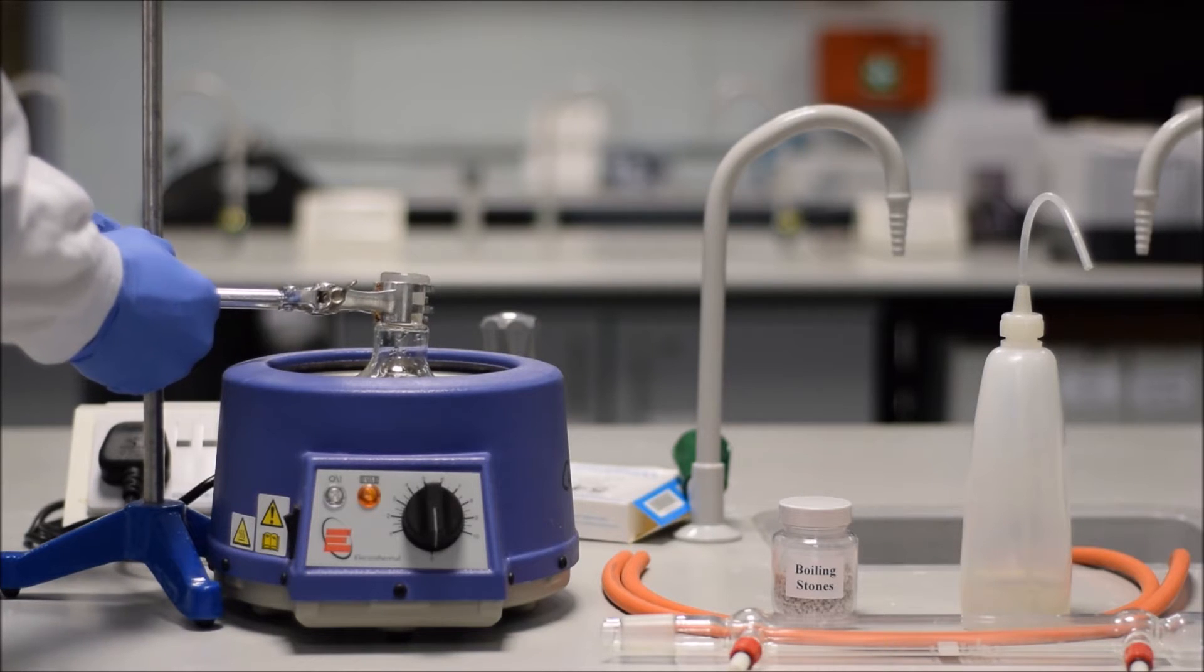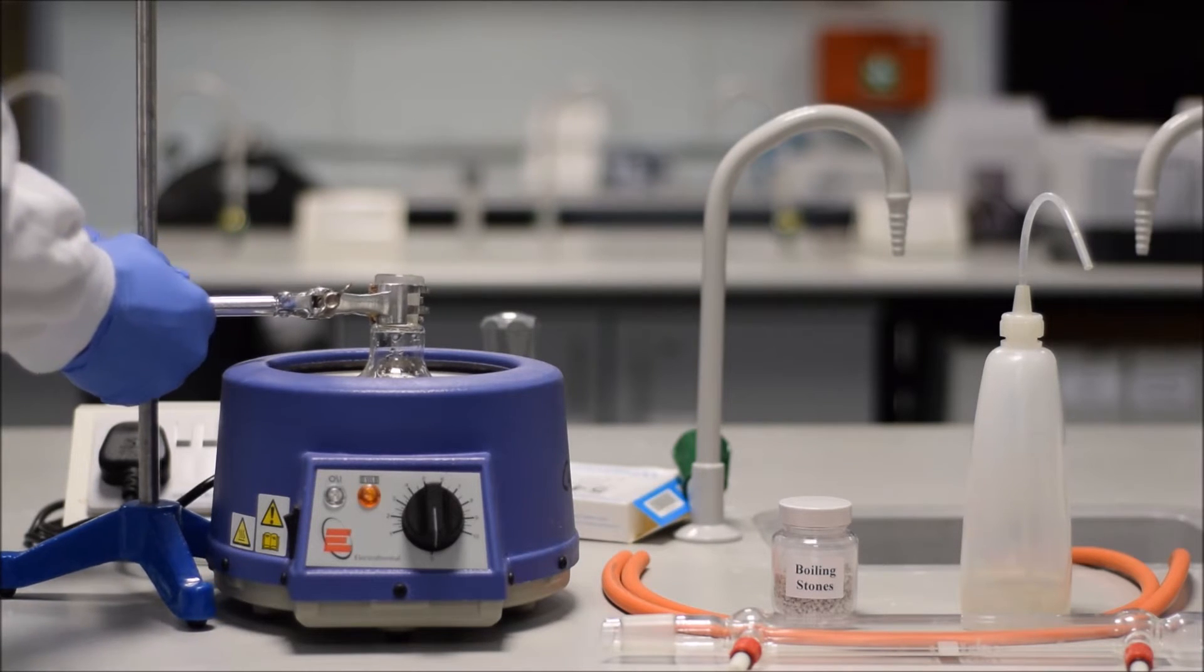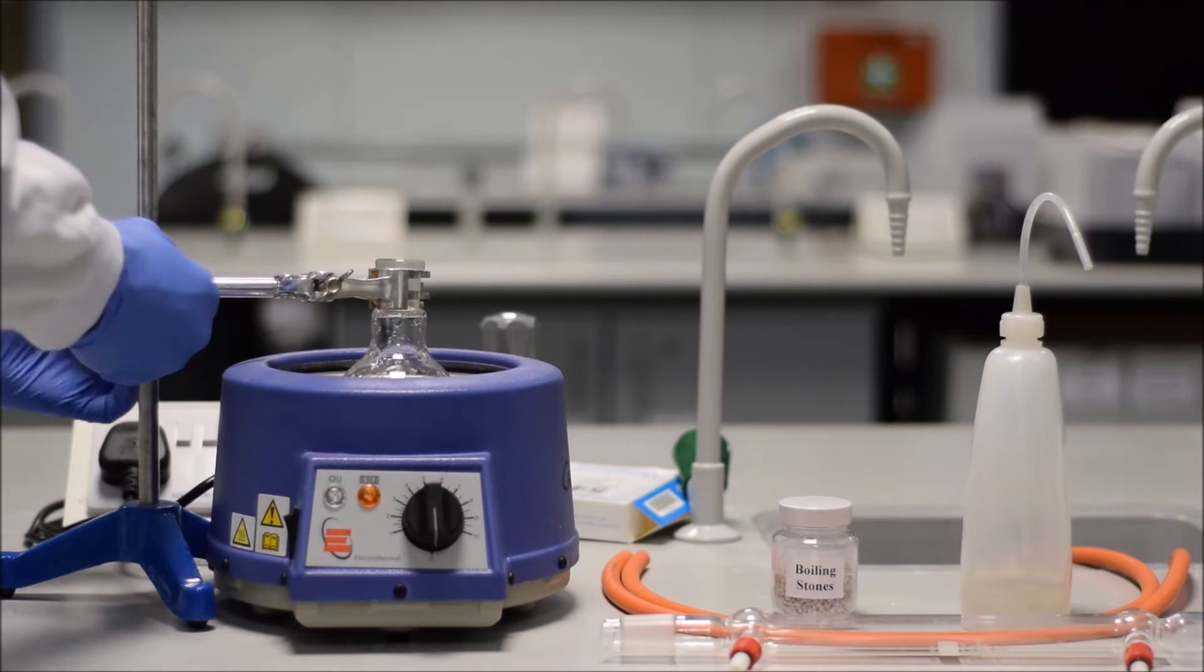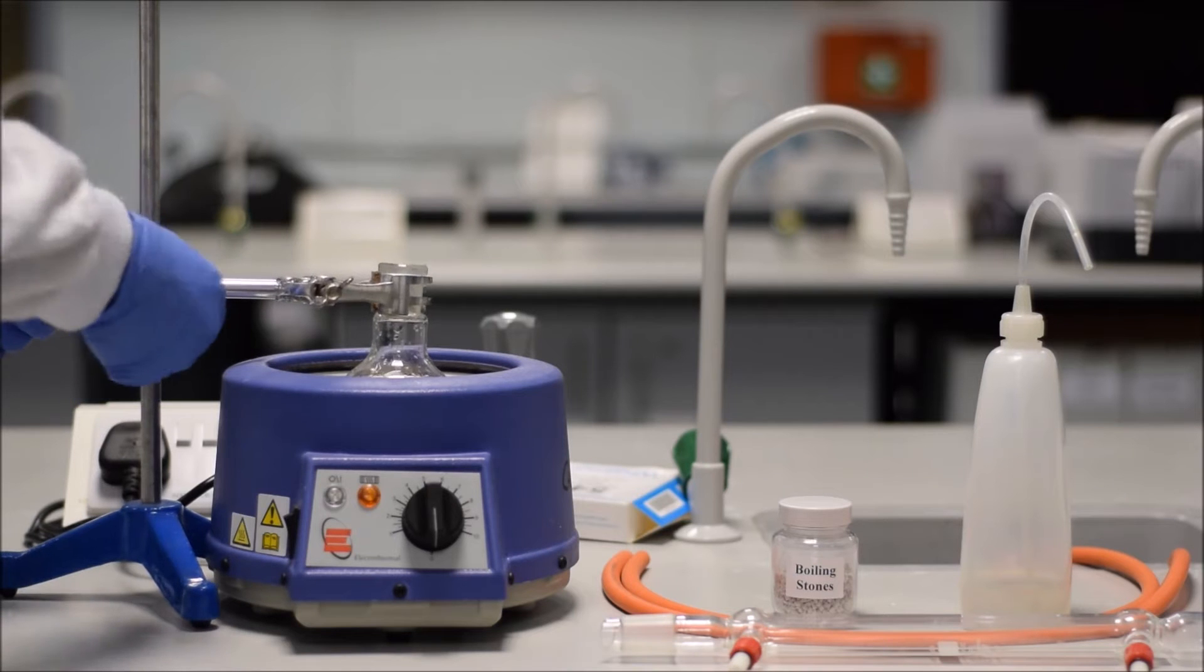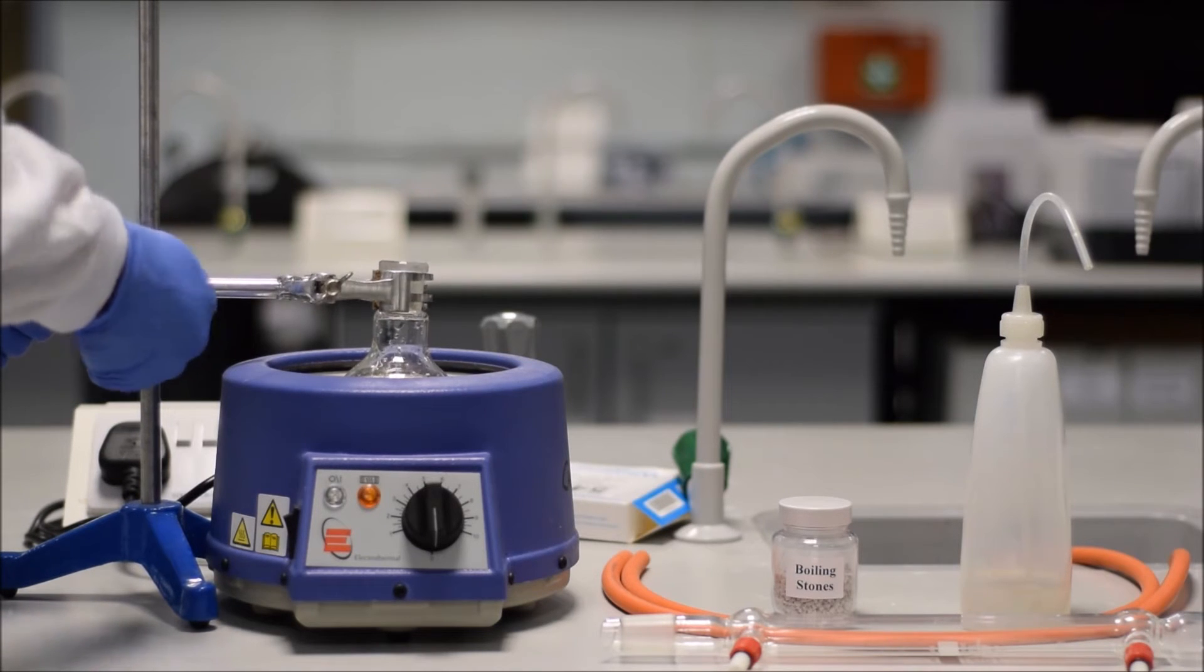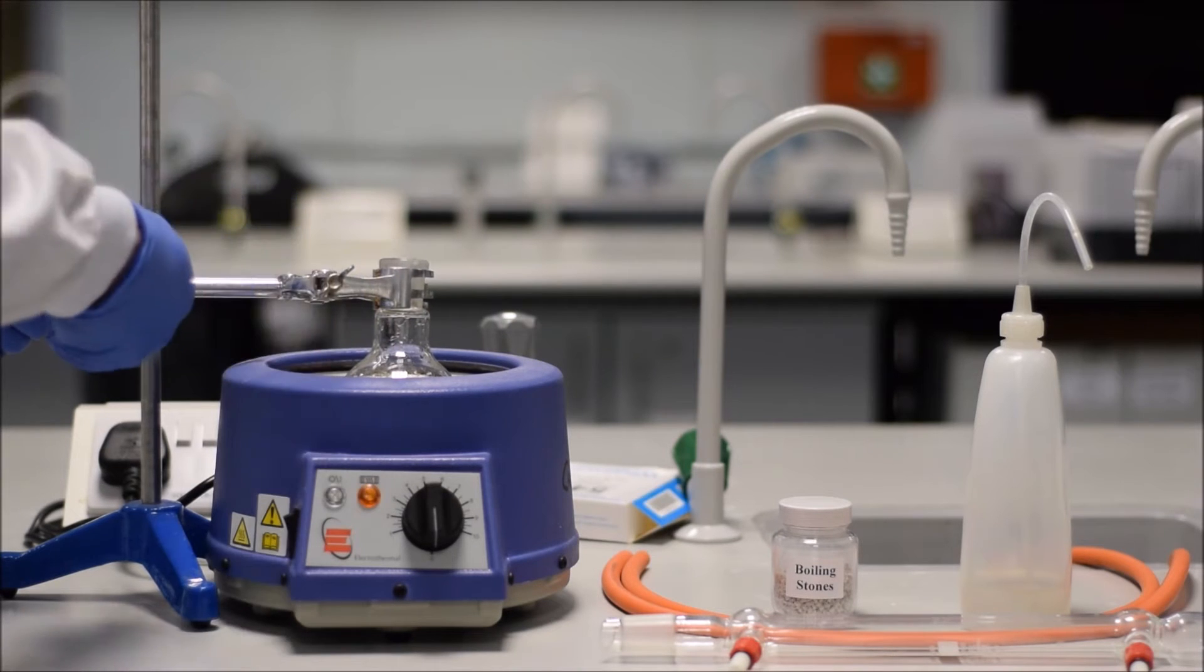Next, lower your flask into position. It's important that the heating mantle is cold at this point. You don't want to heat it up before you've got the condenser in, otherwise reagents and solvent are going to evaporate into the lab, and that's going to be hazardous for you and for others. So clamp it securely, following the same method that we always follow.